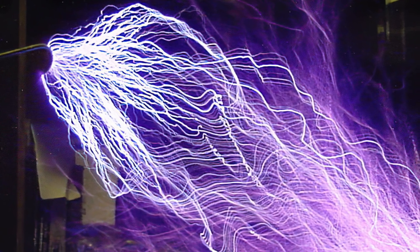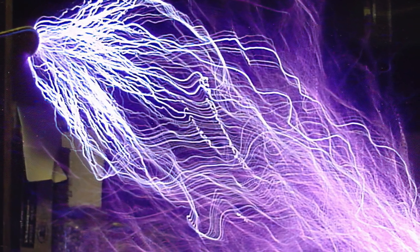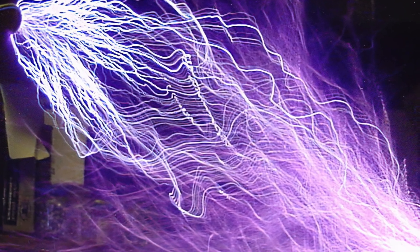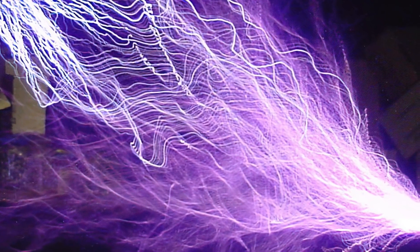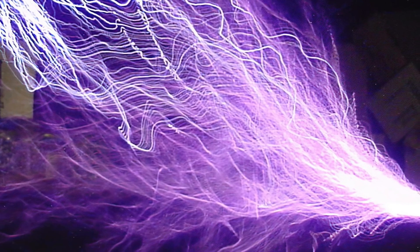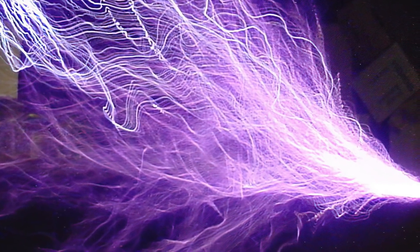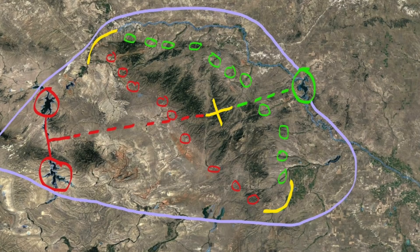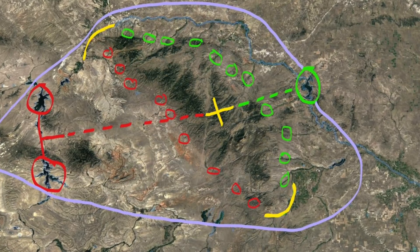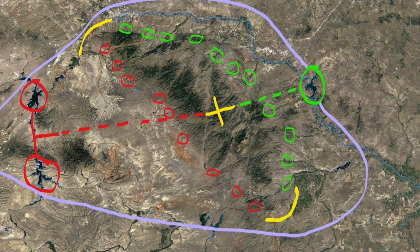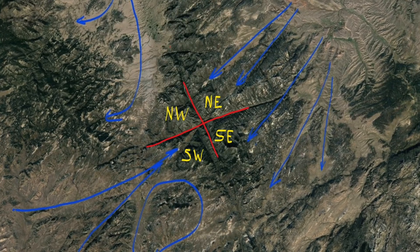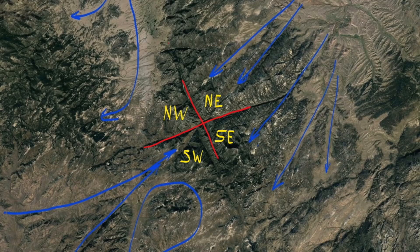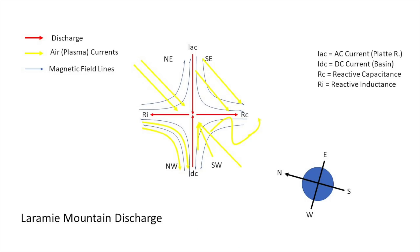The Tesla coil discharging to an electrode: white filaments of current direct connect to the electrode, while violet plasma flames of reactive power shoot outward in a cone around the discharge. The angle of the cone isn't 90 degrees, but that's an artifact of this particular circuit's phase angle. The Laramie circuit resulted in a discharge along a dipolar alignment between circuit domains, with a capacitive reaction aimed 90 degrees clockwise from the polar alignment, and an inductive reaction 90 degrees counterclockwise, forming a cross, because the domains were exactly 180 degrees out of phase.